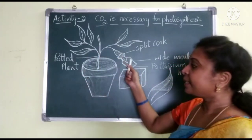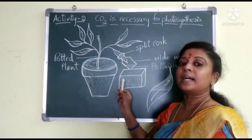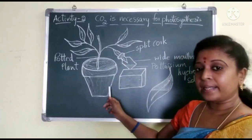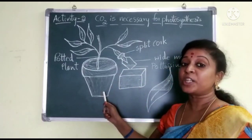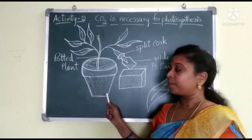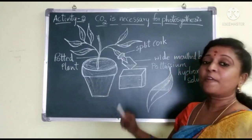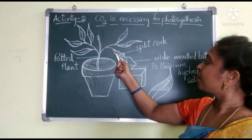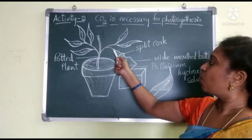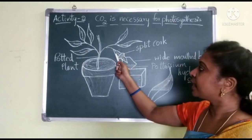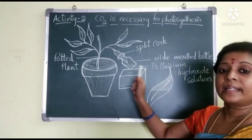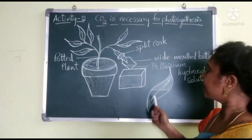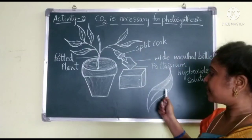Arrange the apparatus like this and place it under sunlight for 3 to 4 hours. After 3 to 4 hours, take off the leaf from the plant — the leaf which you kept in the bottle. Remove that leaf from the plant and perform the starch test on it. This starch test is the same activity we already performed as the first activity.